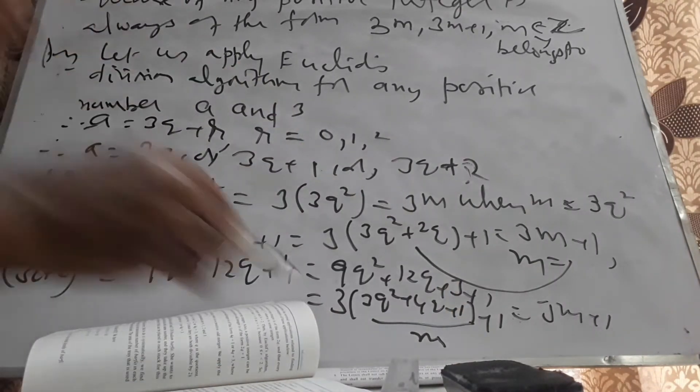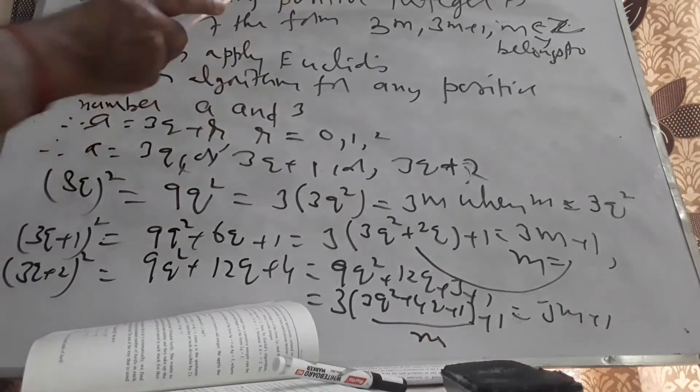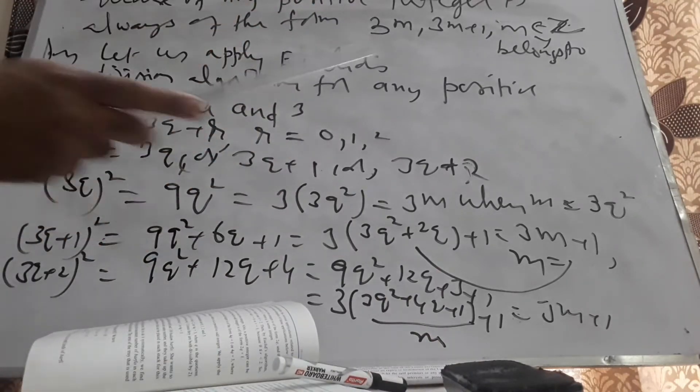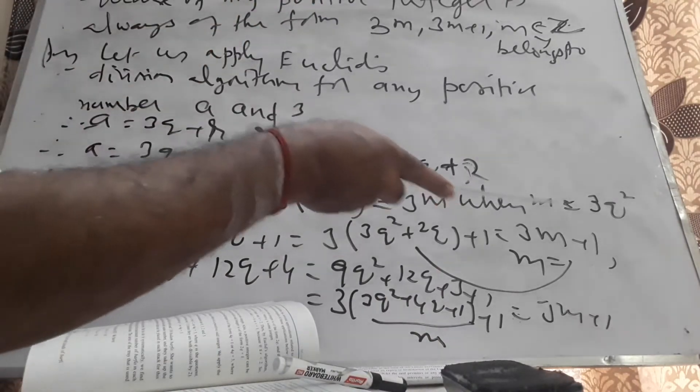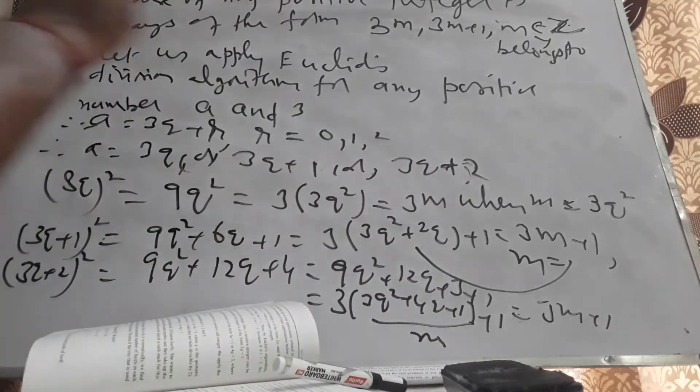Therefore the square of any positive integer will always be of the form 3m or 3m+1. These two cases cover all possibilities, written in terms of 3m and 3m+1.